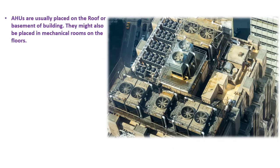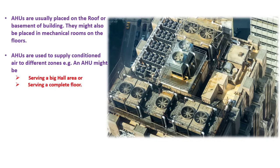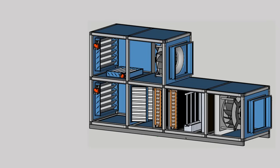AHUs are usually placed on the roof or basement of the building. They might also be placed in mechanical rooms on the floors. AHUs are used to supply conditioned air to different zones of the building — for example, an AHU might be serving a big hall area or a complete floor of the building.